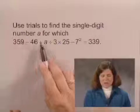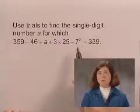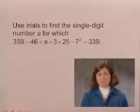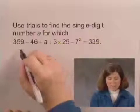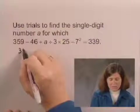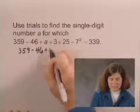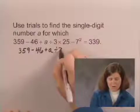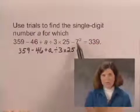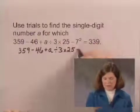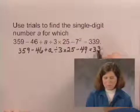If we look through this expression, we find that there is an exponent. So the first thing we need to do according to the rules for order of operations is to simplify that exponential expression. So I will copy the rest of the expression, 359 minus 46 plus A divided by 3 times 25, and I'll evaluate 7 to the second power as 49 minus 49 equals 339.